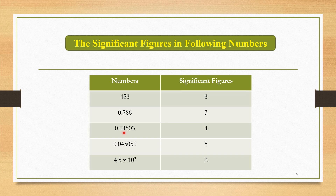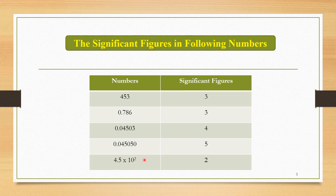The third number is 0.04503 — we neglect the initial zeros, leaving 4503, so the significant figures are equal to 4. The next number is 0.045050 — neglecting the initial zeros, the remaining digits are 4, 5, 0, 5, and 0, giving 5 significant figures. The next number is 4.5 × 10⁻², and counting digits 4 and 5, the significant figures equal 2.